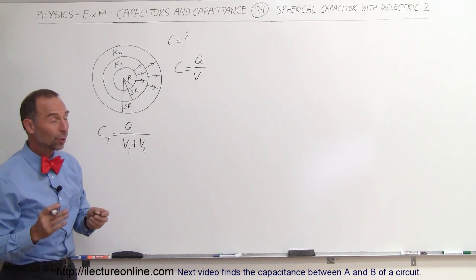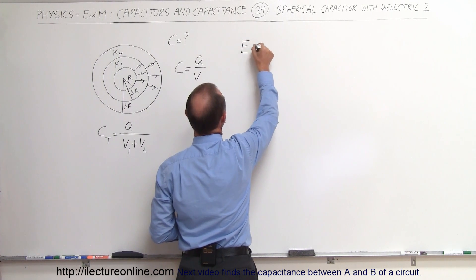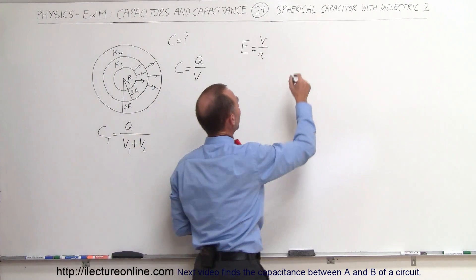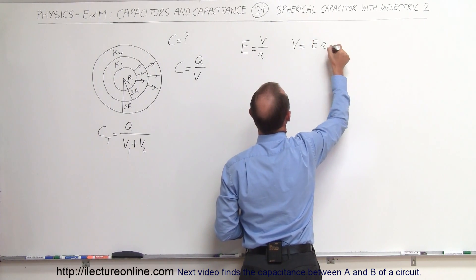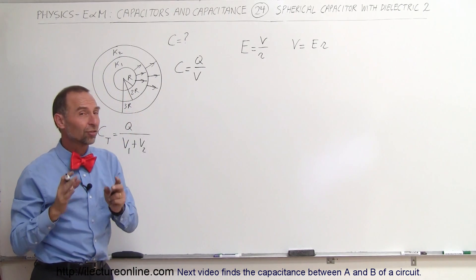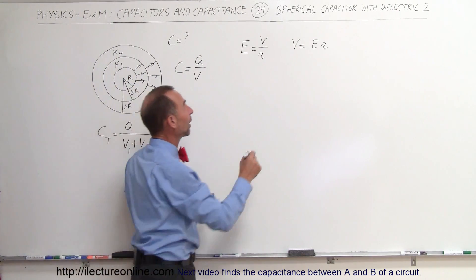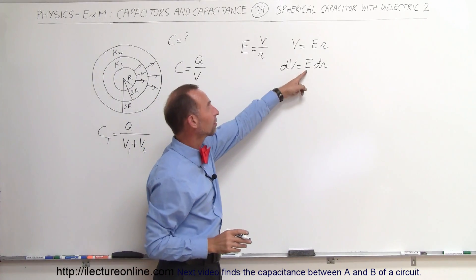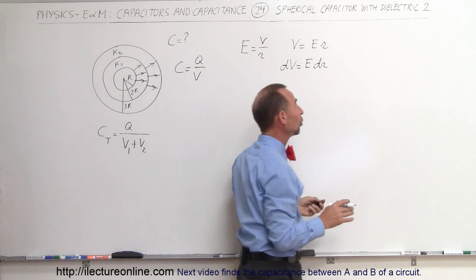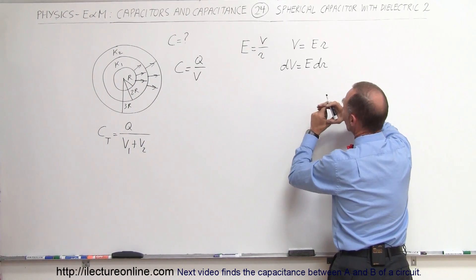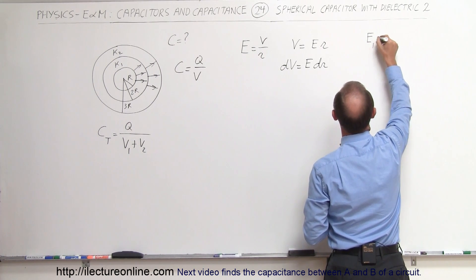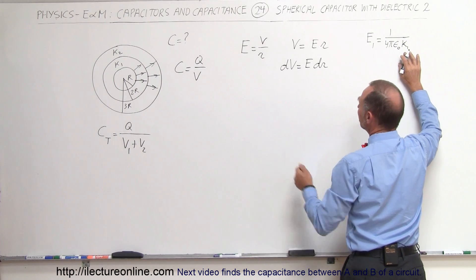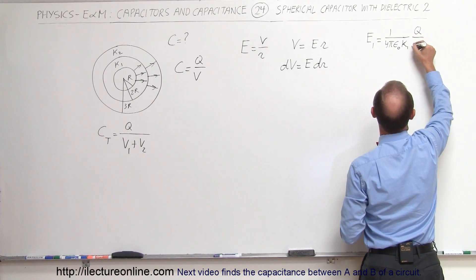To find the potential across each layer, we start with the definition of the electric field — that the electric field is by definition the potential difference divided by the distance across the electric field. We can then say that potential can be written as E times dr. Since the electric field on a spherical capacitor is not constant and varies with radius, we use Coulomb's law, and the electric field on layer 1 is equal to 1 over 4πε₀k1 times q over r².